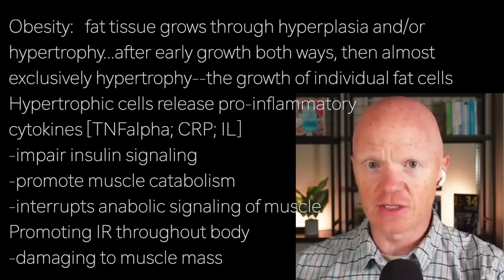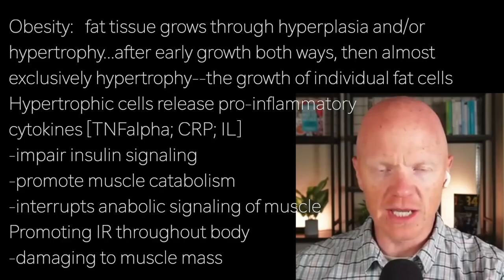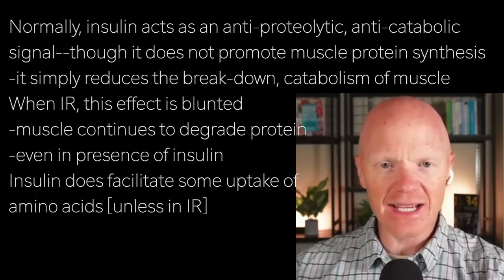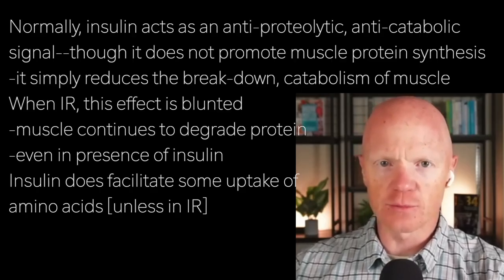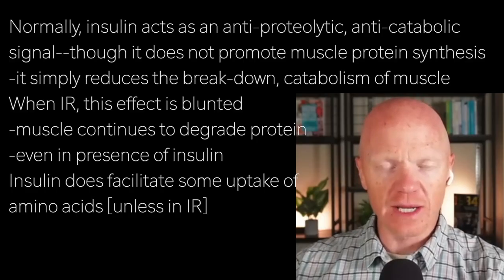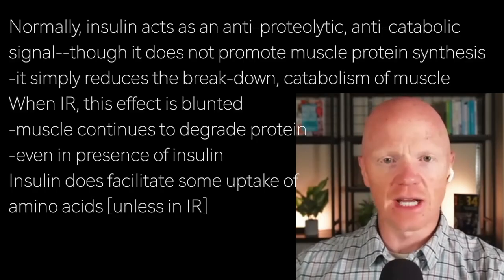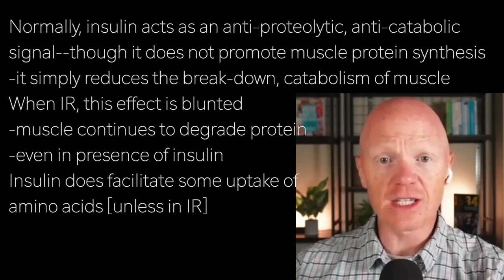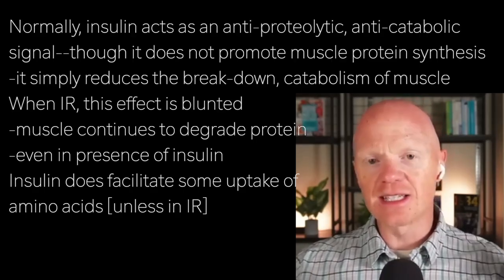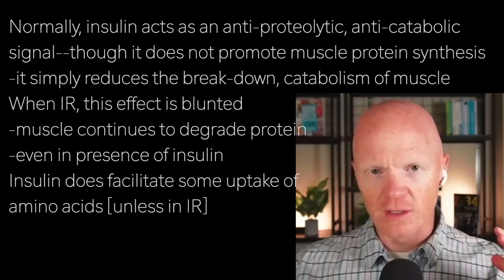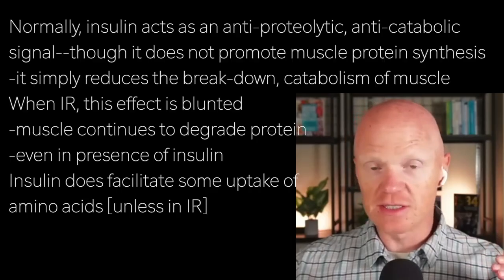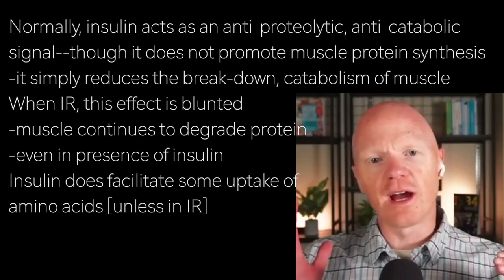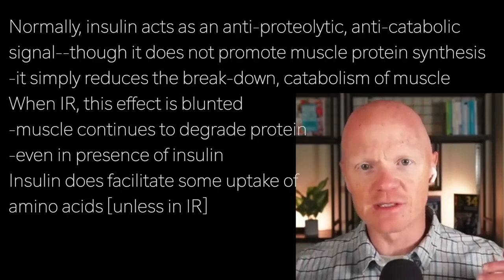Insulin resistance is damaging to the muscle in ways that go beyond glucose uptake. Under normal conditions, insulin acts as an anti-proteolytic signal — an anti-catabolic signal — suppressing muscle protein breakdown. It does not directly stimulate muscle protein synthesis. This has been shown to not be the case in both isolated muscle cells and in whole muscle in humans. So insulin is not essential for the building up of the muscle; its effect on muscle mass is more so on reducing the catabolism or the breakdown.